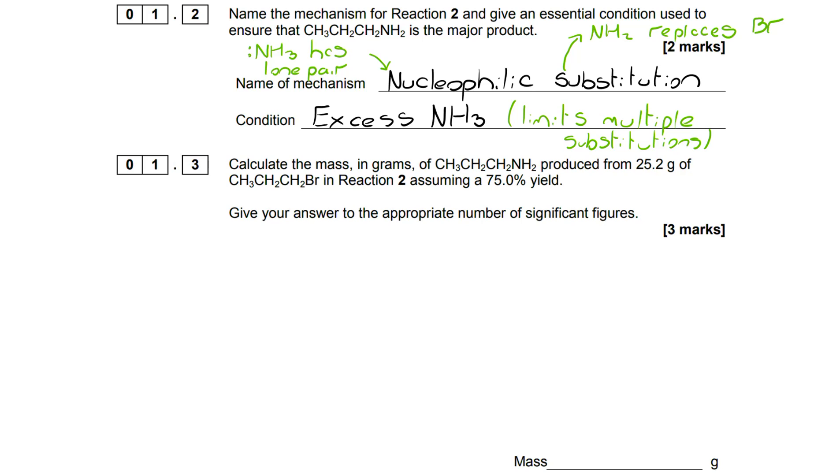For 1.3 we've got a bit more amount of substance, a calculation to do. We need to pay close attention to the detail here. That 75% yield can lead to a bit of confusion, but it is actually very straightforward. In the first instance we've got a mass of 1-bromopropane and we can work out its Mr, so we can see that we've got 0.205 moles of that.